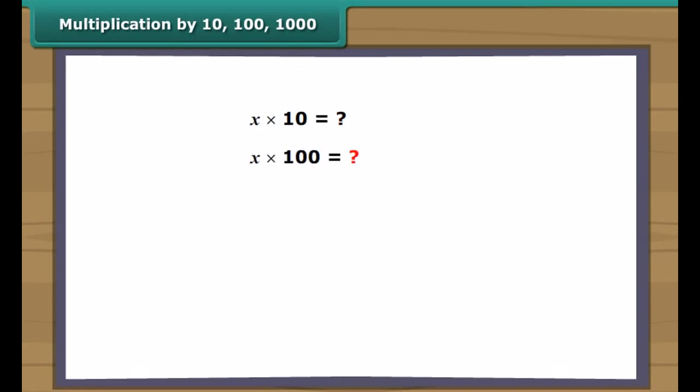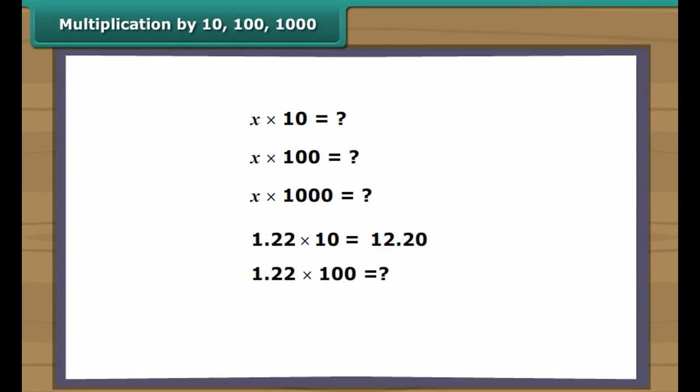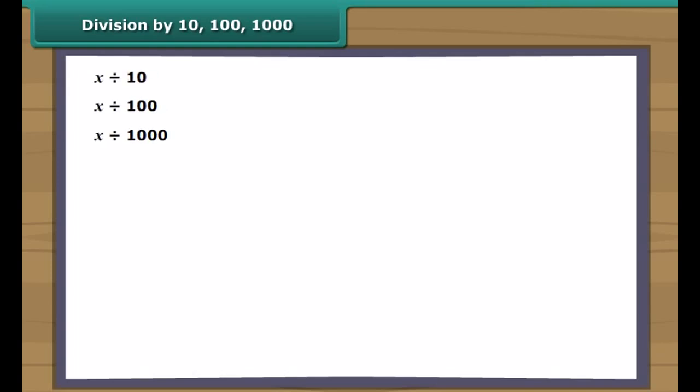Multiplication by 10, 100, 1000: what happens when a decimal number is multiplied by 10, 100, or 1000? When we multiply 1.22 by 10, we get 12.20. When multiplied by 100 and 1000, we get 122 and 1220 respectively. We observe that when a decimal number is multiplied by 10, the decimal point shifts to the right by one place, while the digits remain the same. Similarly, multiplying by 100 and 1000 shifts the decimal point to the right by 2 and 3 places respectively.